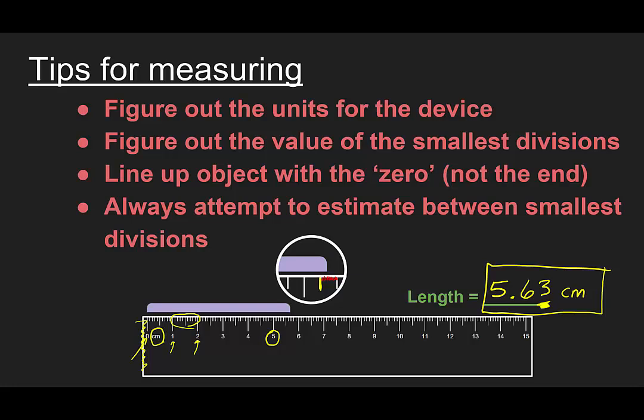Incidentally, this is also known as the uncertainty of this instrument. So generally, if we want to be even more specific, we would say this object is 5.63 plus or minus .01 centimeters. In other words, that last digit, it may be one unit higher or one unit lower, but it should be somewhere within that range.